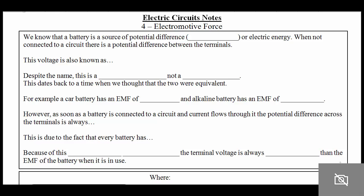All right, Physics 12, welcome back to our notes on electric circuits. This is the fourth and final notes for this unit on something called electromotive force. We know that batteries are sources of potential difference, which is also known as voltage, and that basically this voltage provides electrical energy to the circuit.